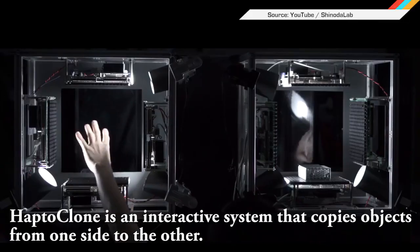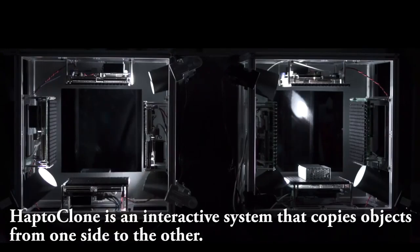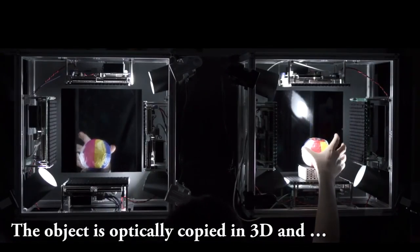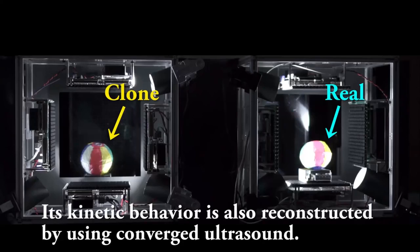Japanese researchers made a haptic device allowing users to touch and interact with distant objects. The haptic clone first creates an optic field using aligned mirror arrays so you can see things placed in the device.